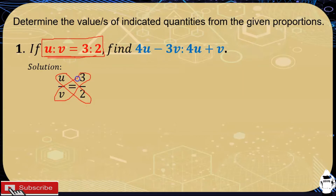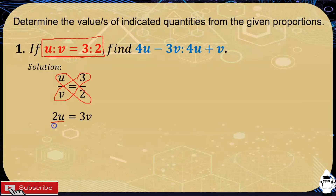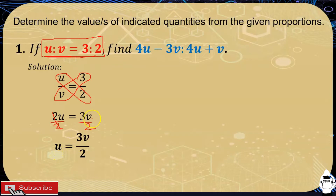Using the cross multiplication property, we have 2 times u, that is 2u, is equal to 3 times v, that is 3v. Now we solve for u by dividing both sides of the equation by 2, so we cancel the 2 and get u is equal to 3v over 2. This is the value of u.